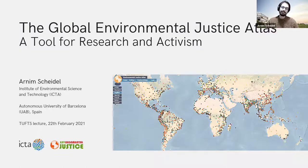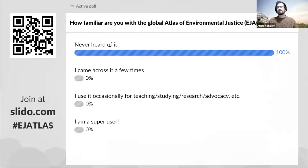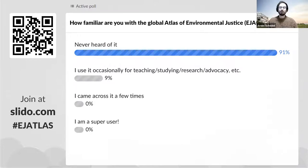Before that, it would be great if I could know a little bit more about you, the audience. I'd like to invite you to join this live poll. You can see it in this slide — it's very easy. Just scan the QR code or go to slido.com and enter the password 'EJ Atlas'. The first question would be: how familiar are you with the Global Atlas of Environmental Justice? Maybe you've never heard of it, or you came across it a few times, use it occasionally for teaching, research, advocacy — or perhaps you're even a super user.